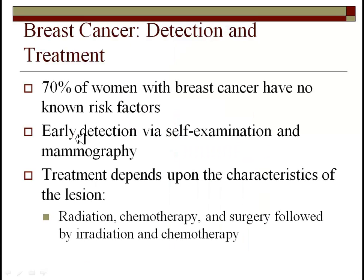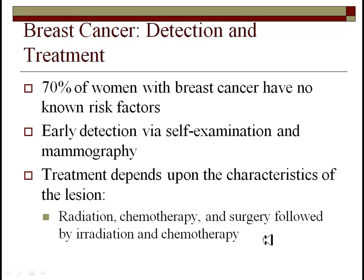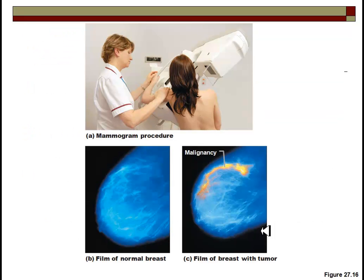Key to fighting breast cancer is early detection: self-examination — if you notice a lump that wasn't there before, get checked. If you have a risk factor, consider mammograms every six months rather than every year. If caught early, the cancer can be excised without removing the entire breast, but typically treatment involves mastectomy followed by radiation and chemotherapy. The goal is to catch it before it metastasizes — cancer of the breast tissue itself can be removed, but if it spreads to the lungs or elsewhere it becomes far more deadly. A mammogram makes malignancies relatively easy to identify.